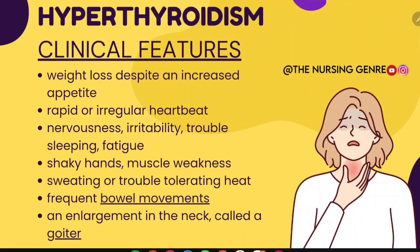Clinical features of hyperthyroidism include weight loss despite an increased appetite, rapid or irregular heartbeats, nervousness, irritability, trouble sleeping, fatigue, shaky hands, muscle weakness, sweating, trouble tolerating heat, frequent bowel movements or diarrhea, and an enlargement in the neck called a goiter.